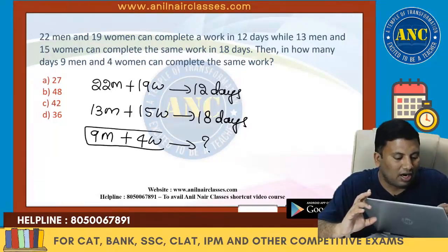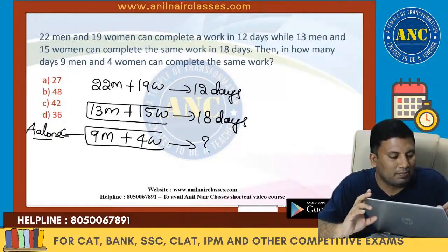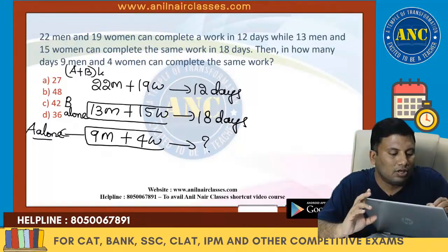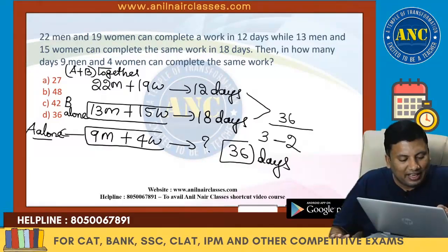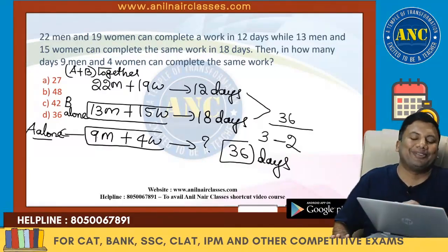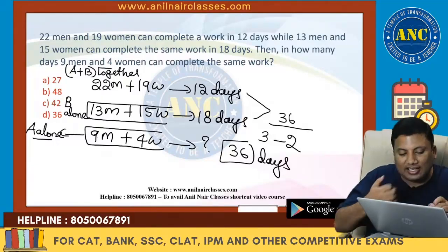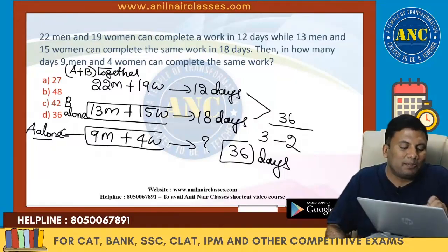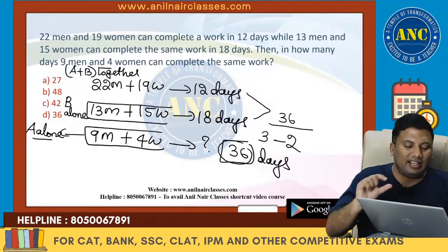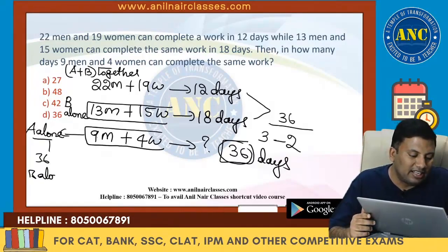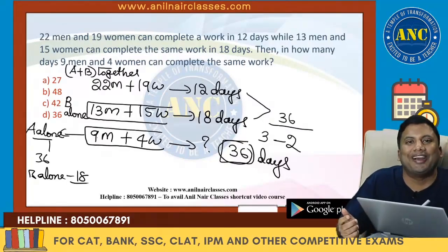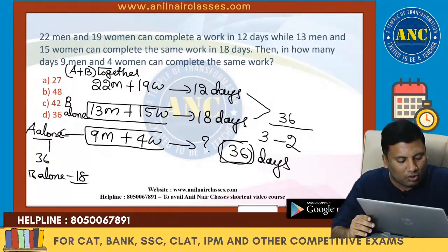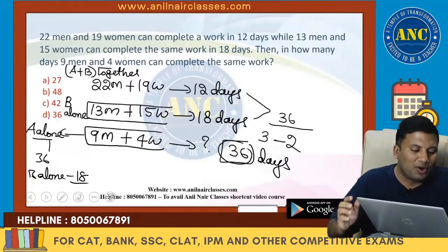Call the group (13m + 15w) as A alone, completing work in 18 days, and (9m + 4w) as B alone. Now 9 + 13 = 22 men, and 4 + 15 = 19 women — which is exactly the combined group (A + B together) that takes 12 days. So A alone takes 36 days, B alone takes 18 days, and together they give 12 days. A beautiful question!